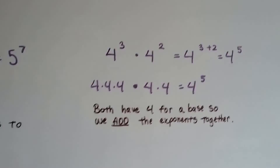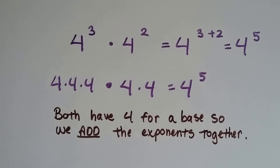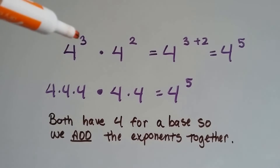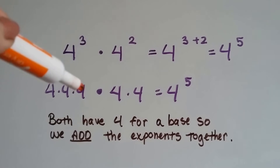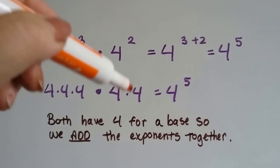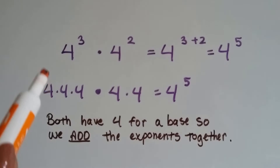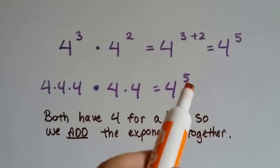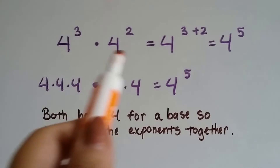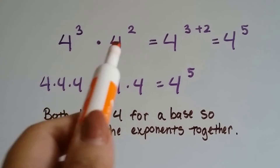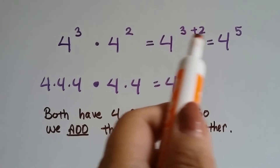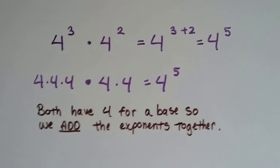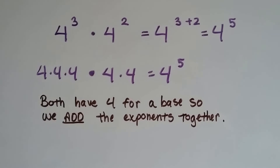Take a look at this one: we've got 4 to the third power times 4 to the second power. 4 to the third power means 4 times 4 times 4; 4 to the second power means 4 times 4. So it just means we have 4 times 4 times 4 times 4 times 4 — we've got 4 to the fifth power. We don't multiply the bases together; we just add the exponents because the bases are the same. We now have 4 to the fifth power.